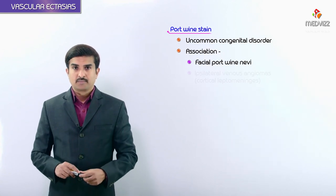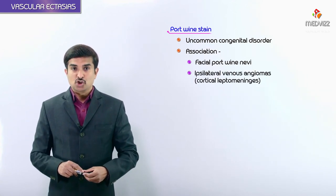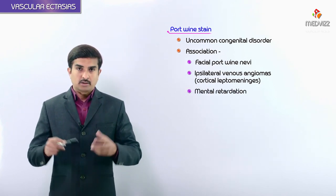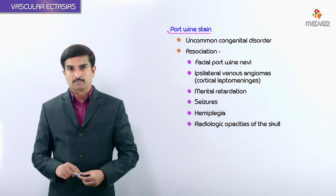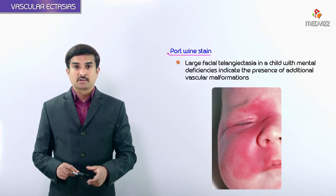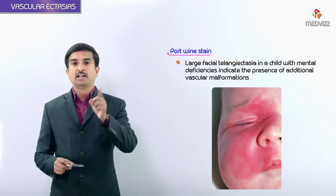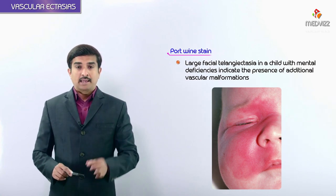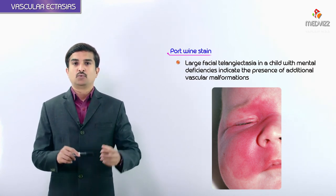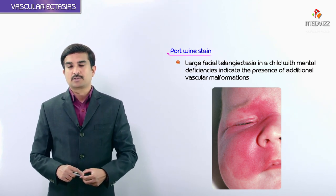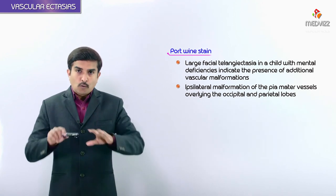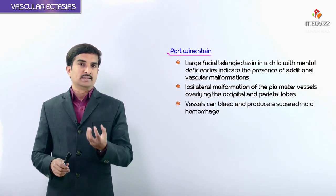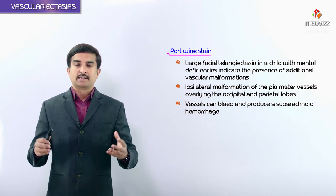Lesions occurring in the distribution of the trigeminal nerve are associated with Sturge-Weber syndrome. This uncommon congenital disorder is associated with facial port wine nevi, ipsilateral venous angiomas in the cortical leptomeninges, mental retardation, seizures, and hemiplegia. Some cases involve ipsilateral malformations of the pia mater vessels overlying the occipital and parietal lobes, which can bleed and produce subarachnoid hemorrhage.